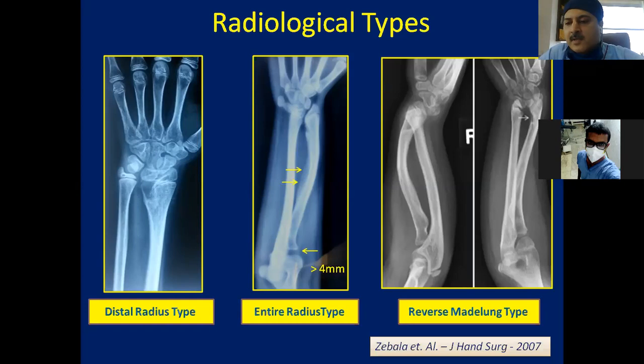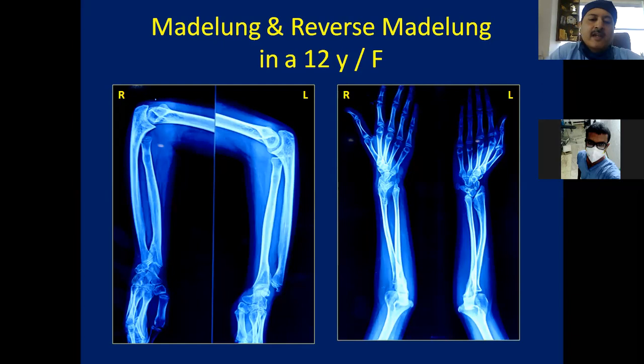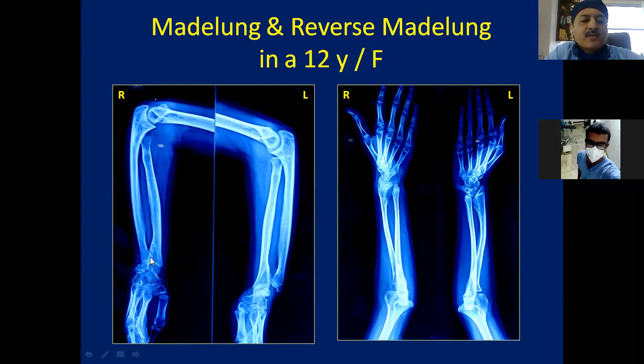Recently we saw a 12-year-old girl with coexisting Madelung and reverse Madelung — Madelung on the left side where the ulna jets out dorsally, and reverse Madelung on the right side where the ulna sinks volarly. You can see the volar radio-ulnar ligament sign on one side and the anomalous dorsal radio-ulnar ligament sign on the other side. This combination of Madelung and reverse Madelung on opposite sides can exist.